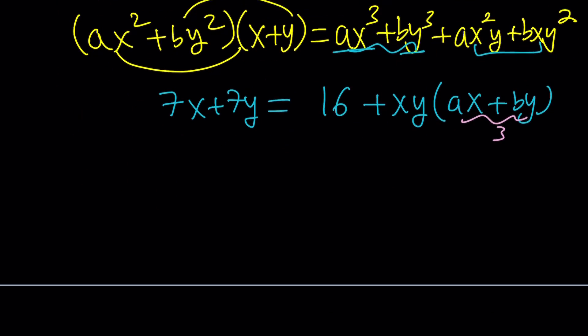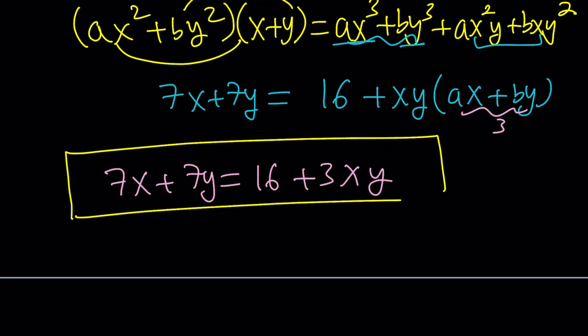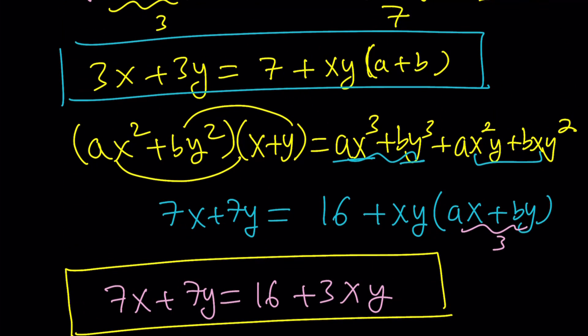Awesome. We also know that ax plus by is equal to 3. So from here, we get something very important. 7x plus 7y equals 16 plus 3xy. Awesome. We've got our second equation. I'm going to number these equations. 1, 2, 3. This is 1. This is 2. And then we're going to come up with one more.